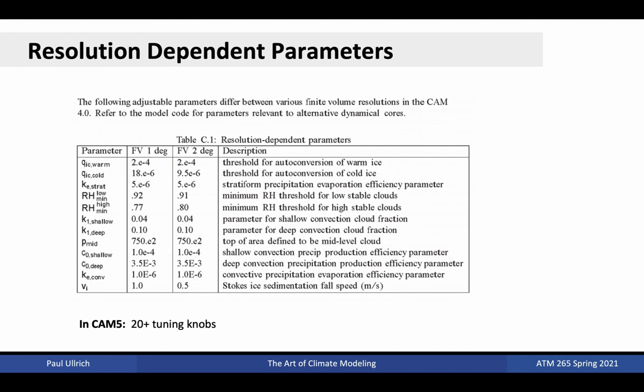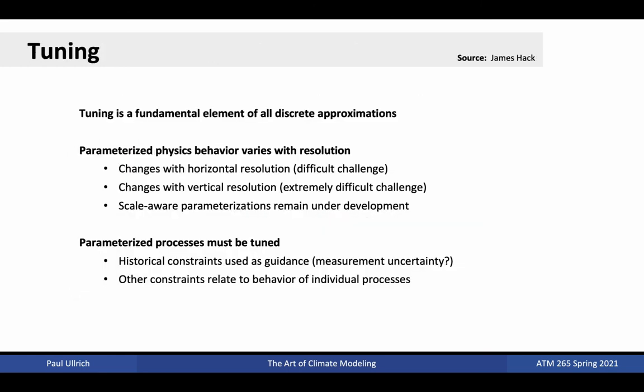In CAM5, the number of tuning knobs has increased to over 20 as more complex parametrizations have been added. The tuning process, that is, the selection of reasonable values of these parameters, is a fundamental element of any discrete approximation. These parametrizations need to be tuned to ensure that the subgrid scale is correctly responding to the model environment, which includes any biases in the environmental state because of the discretization process. Given how the assumptions about the variability of the subgrid are dependent on the scale of individual grid cells, parameters need to be modified as resolution changes. This is a difficult challenge in the horizontal, but an even bigger challenge when it comes to vertical grid spacing. The development of scale-aware parametrizations offers some promise of reducing the number of tuning parameters, but development of these schemes is an ongoing challenge.